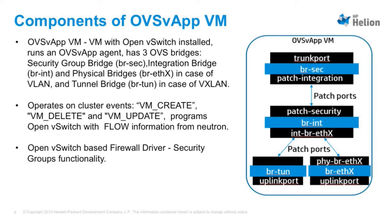These are the internals of the OVSVF VM. We have the following bridges inside it. It runs an L2 agent called the OVSVF agent, which configures flows on the security bridge and integration bridge. For the VXLAN case, we have a tunnel bridge, and for the VLAN case, we have physical bridges. It runs on an event basis — when you spawn a VM on vCenter, you get a VM create event, and it talks to the Neutron server. For security groups, we have an OpenVisage-based firewall driver.